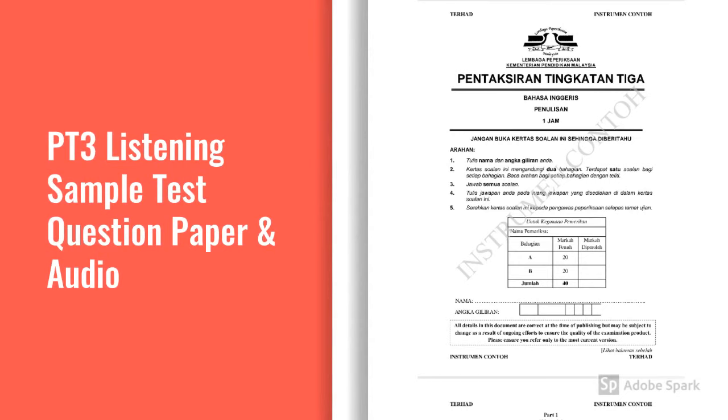This is the PT3 Listening Test. There are 5 parts to the test. You will hear each part twice. For each part of the test, there will be time for you to look at the questions and time for you to check your answers. Write your answers on the question paper. You will have 6 minutes at the end of the test to copy your answers onto the answer sheet. Recording will now be stopped. Please ask any questions now because you must not speak during the test.